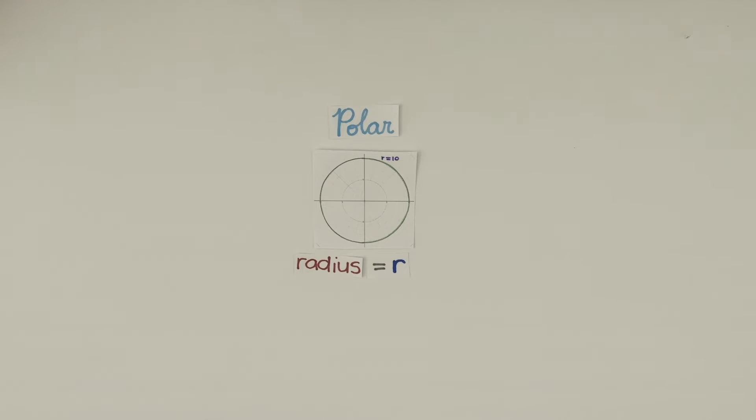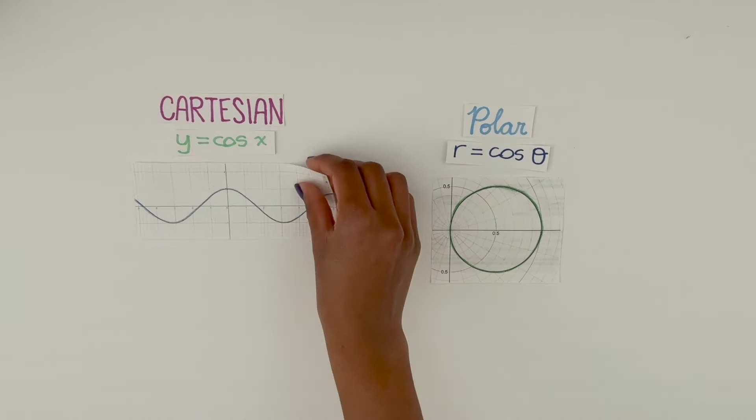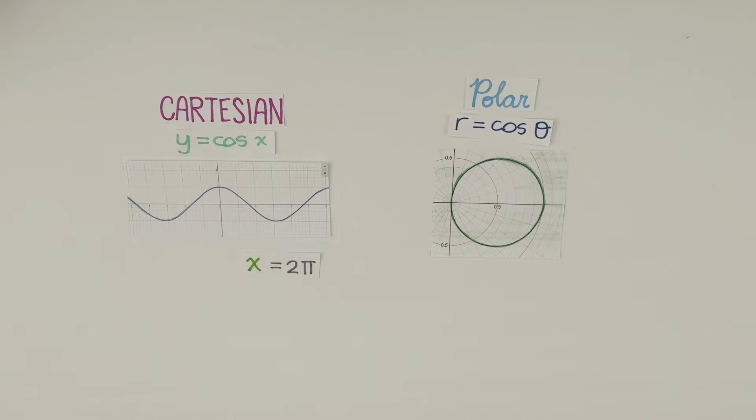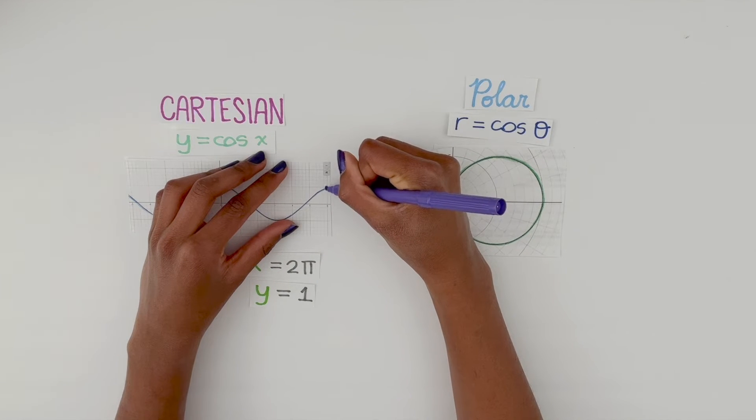Still a little confused? Let's go back to our very first example. Let's make x equal 2π. That means y would equal 1, and that is represented by this point on the graph.